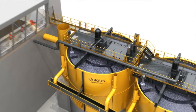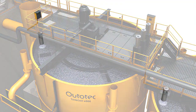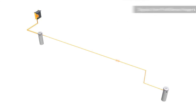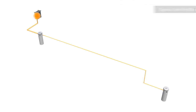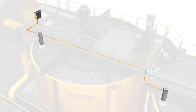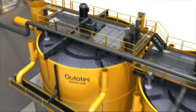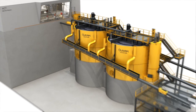The FrothSense system utilizes a single cable connection between each imager and the connection cabinet for both communications and power supply, making installation and maintenance very straightforward and easy.